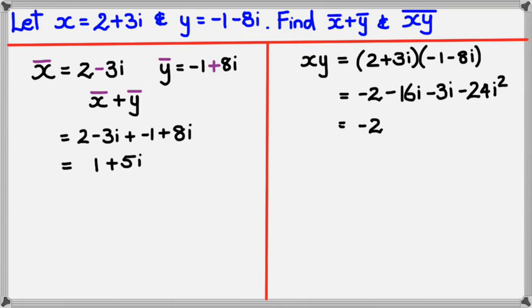Simplifying this, we've got negative 2 minus 19i plus 24, because i squared is negative 1. Negative 24 times negative 1 is positive 24. And simplifying this, we're going to get 22 minus 19i. Now this is what xy is.